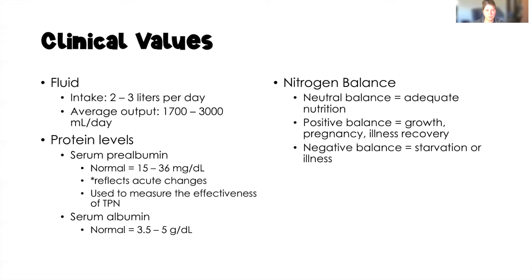Protein levels are really important in nutritional assessment. Serum prealbumin is our best indicator of acute nutrition changes; a normal prealbumin is 15 to 36 milligrams per deciliter. Prealbumin is specifically used to measure the effectiveness of TPN — so if a client is on total parenteral nutrition, serum prealbumin is an important measurement, taken weekly or even several times a week. Serum albumin is another protein assessment, with a normal of 3.5 to 5, though it does not reflect acute changes the way prealbumin does.